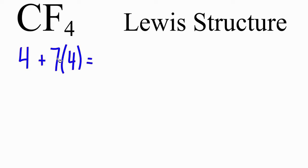And if we add them up, 4 plus 28, that should give us 32 total valence electrons for this Lewis structure.